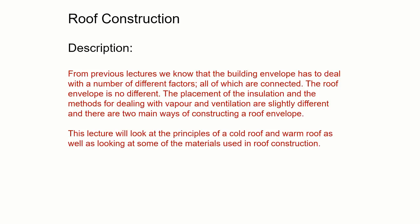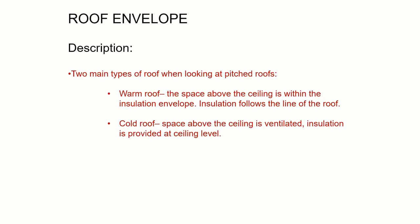We need to deal with insulation for heat loss, and we need to deal with vapor within the building and ways to ventilate that. They are done slightly differently from the building envelope, and there are two main ways of constructing a roof envelope. This lecture is going to look at the principles of constructing a cold roof and a warm roof — the two main types when looking at a pitched roof.